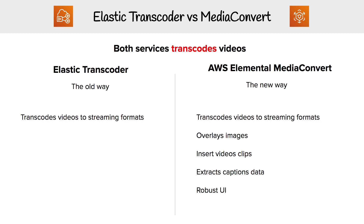You can overlay images, you can insert video clips, you can extract caption data, and it has a much more robust UI. At one point, people were still using Elastic Transcoder because it just had better integration with the AWS API, but Media Convert has pretty much caught up.